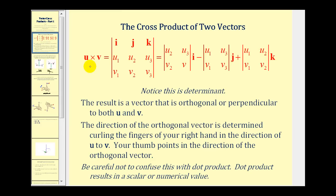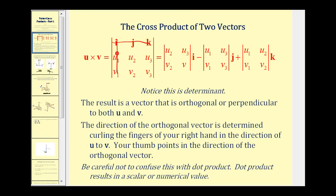To determine the cross product of two vectors, we can evaluate a three by three determinant, where the first row would be the i, j, k vectors, the second row would consist of the components of vector u, and the third row would be the components of vector v. There are several ways to evaluate a three by three determinant, but we'll use the cofactor expansion method, meaning we'll first eliminate row one and column one.